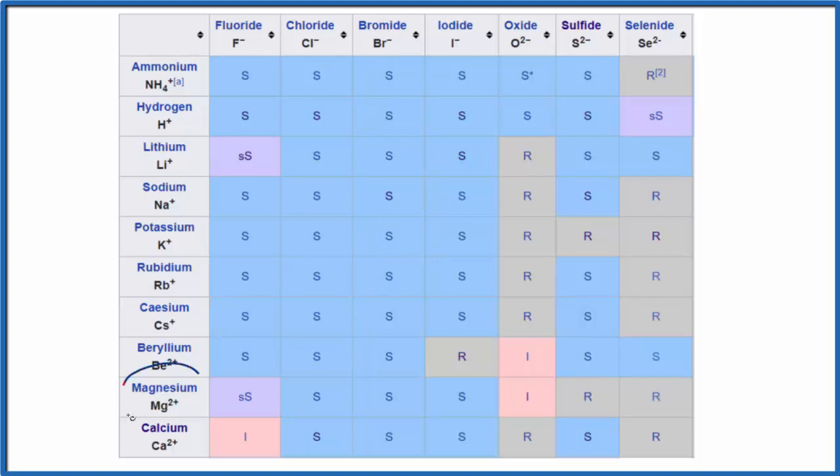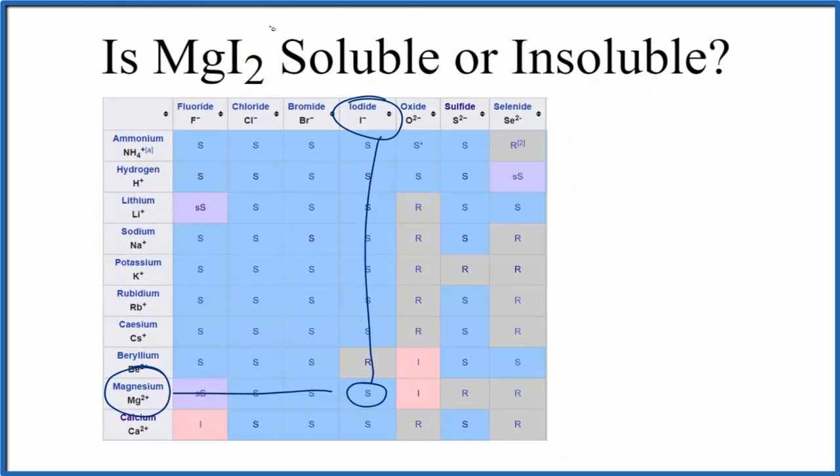We find magnesium right here, and then here's iodide. So we go over and down, and we see that S. That means it's soluble, just like the solubility rules told us.